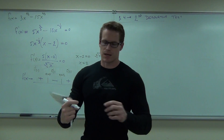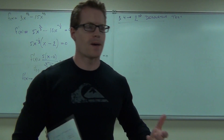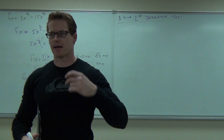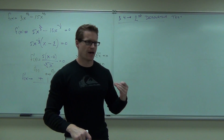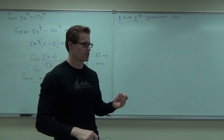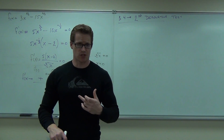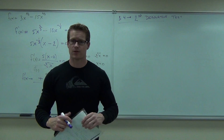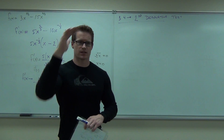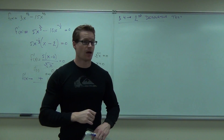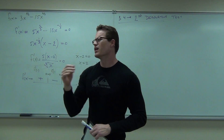Tell me something. If the first derivative has to do with slope, and the slope has to do with increasing and decreasing, what does the second derivative have to deal with? The second derivative is how the slope is changing — whether the slope is increasing or decreasing — and that's going to give you the shape of your curve: concave up or concave down.